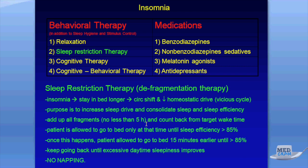For example: if a patient goes to bed at 9 PM and gets up at 6 AM but only sleeps five hours in fragments, we count five hours back from 6 AM, which gives 1 AM. The patient is then only allowed to go to bed at 1 AM. Until sleep efficiency exceeds 85%, nothing changes — they must stay up until 1 AM every night.